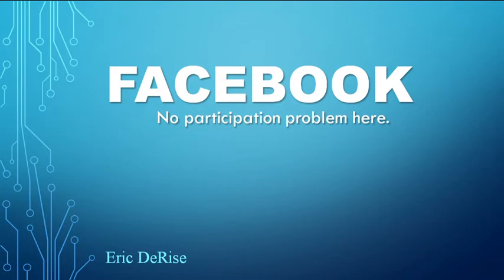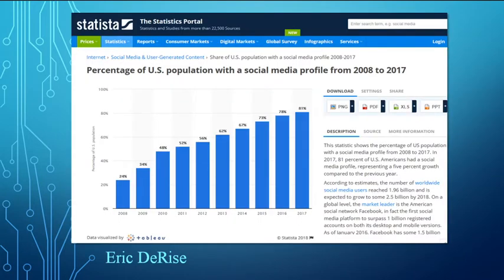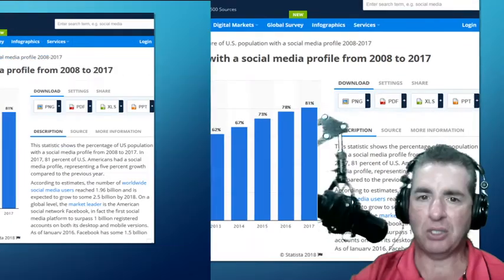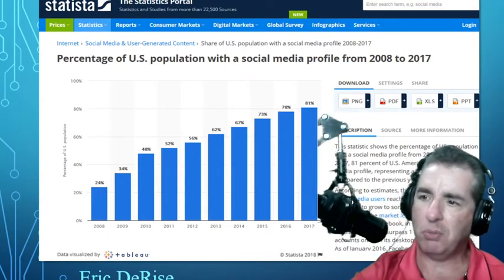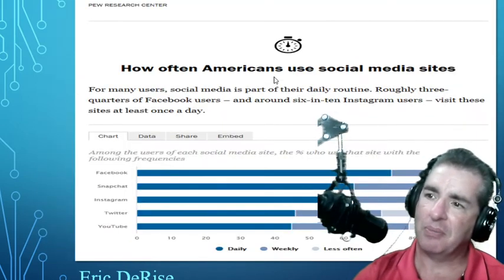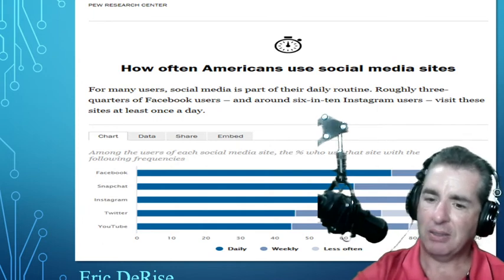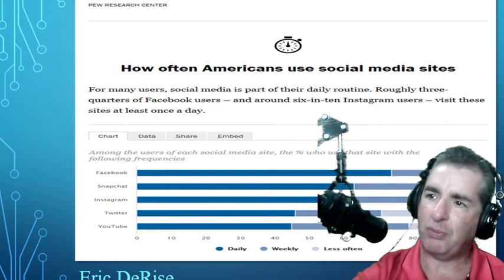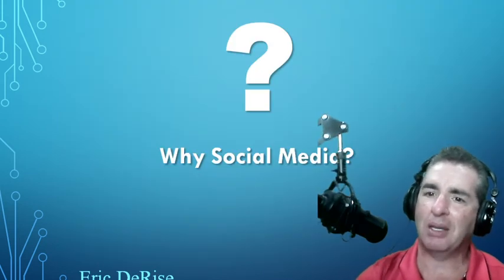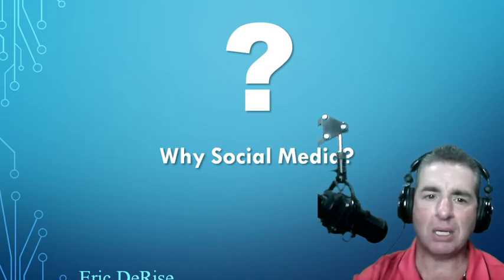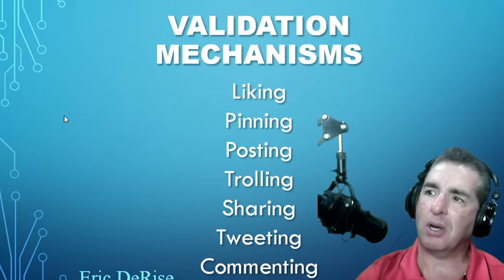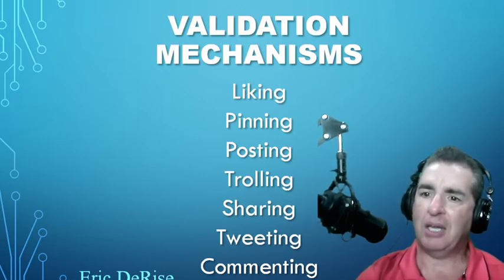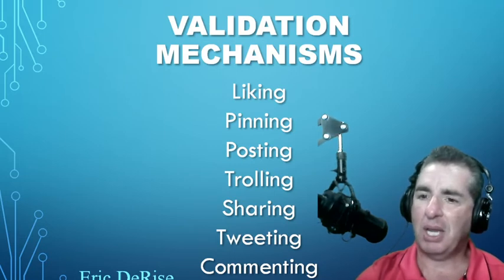No participation problem here — think about it. If you look at the numbers of social media platforms, participation has been having issues in online education, but participation has been shooting way up in social media. Look at these numbers — it's crazy. People are engaging in social media platforms more and more. One has to ask: what is it about social media that would make this happen? I would argue it's the validation mechanisms that are basically the primary activity of social media.